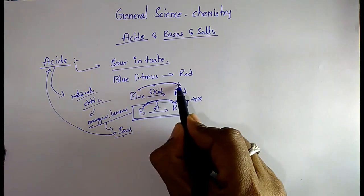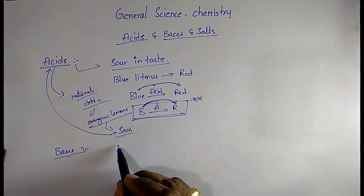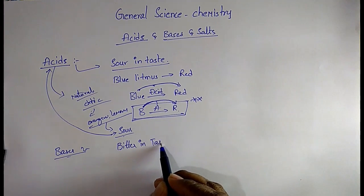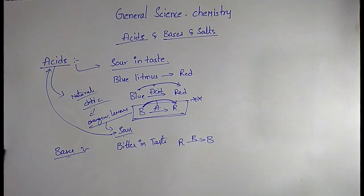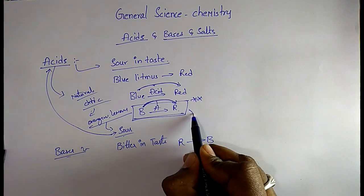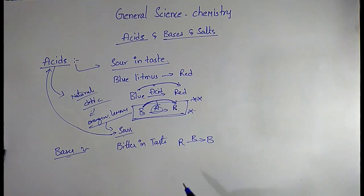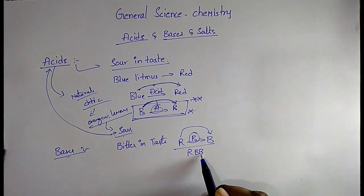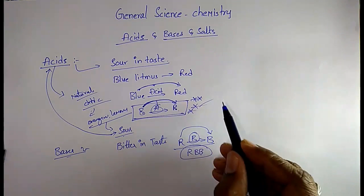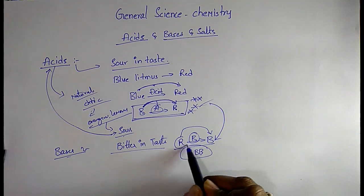Coming to bases: bases are bitter in taste and they convert red litmus into blue litmus. For acids we remember BAR — blue litmus to red litmus. Bases are just the opposite of acids. No need to remember a separate rule — just remember bases convert red litmus to blue litmus, and they are bitter in taste.